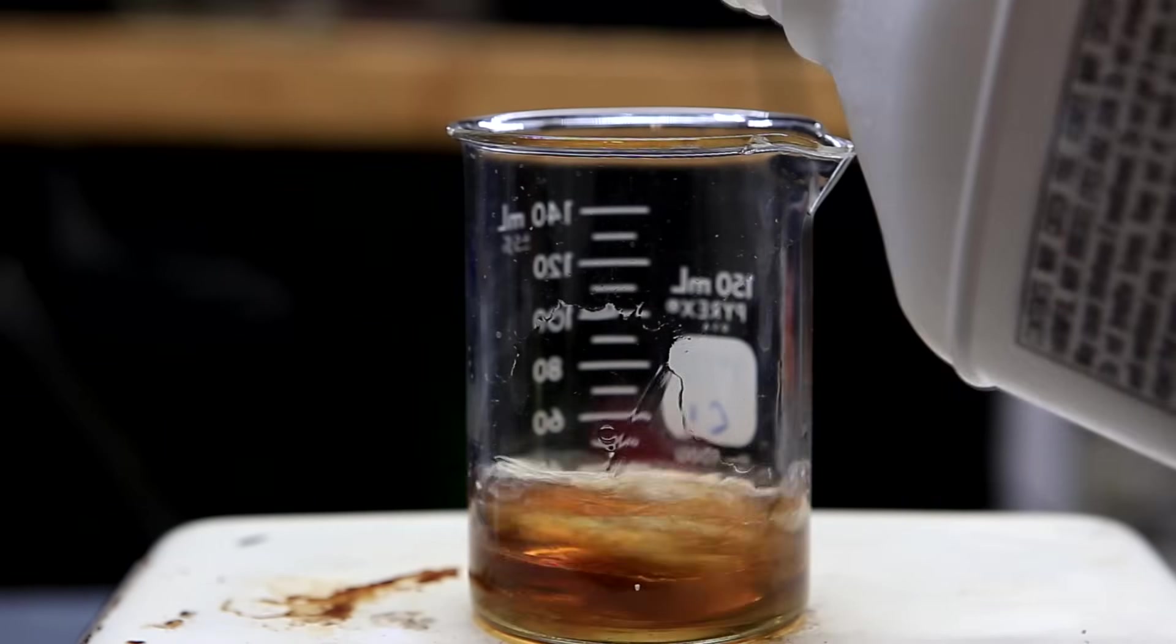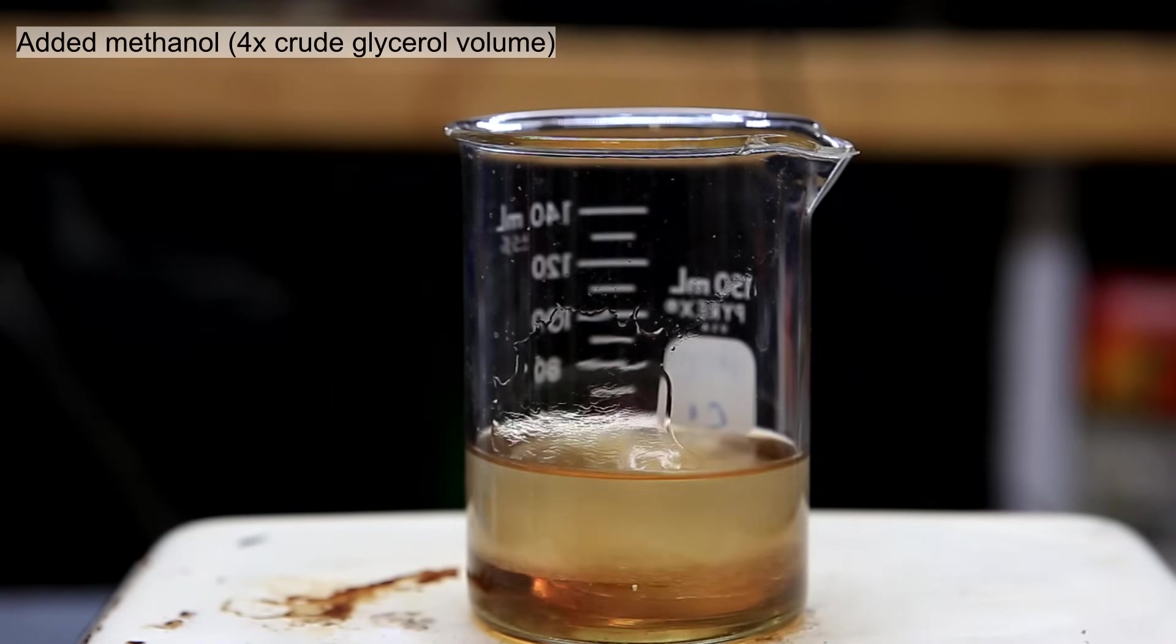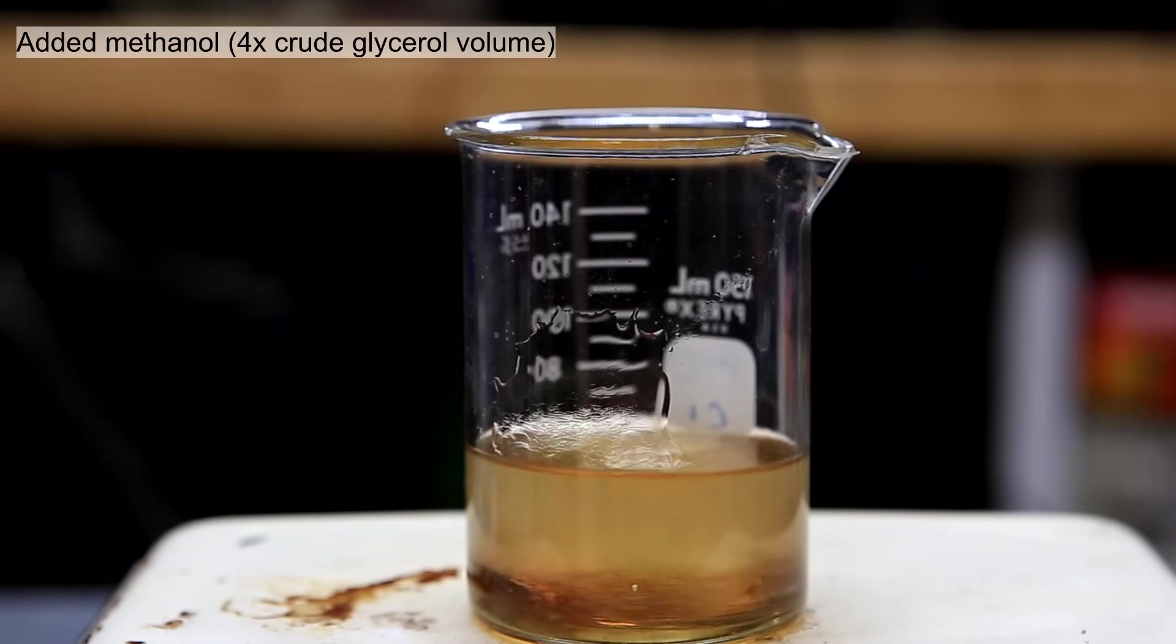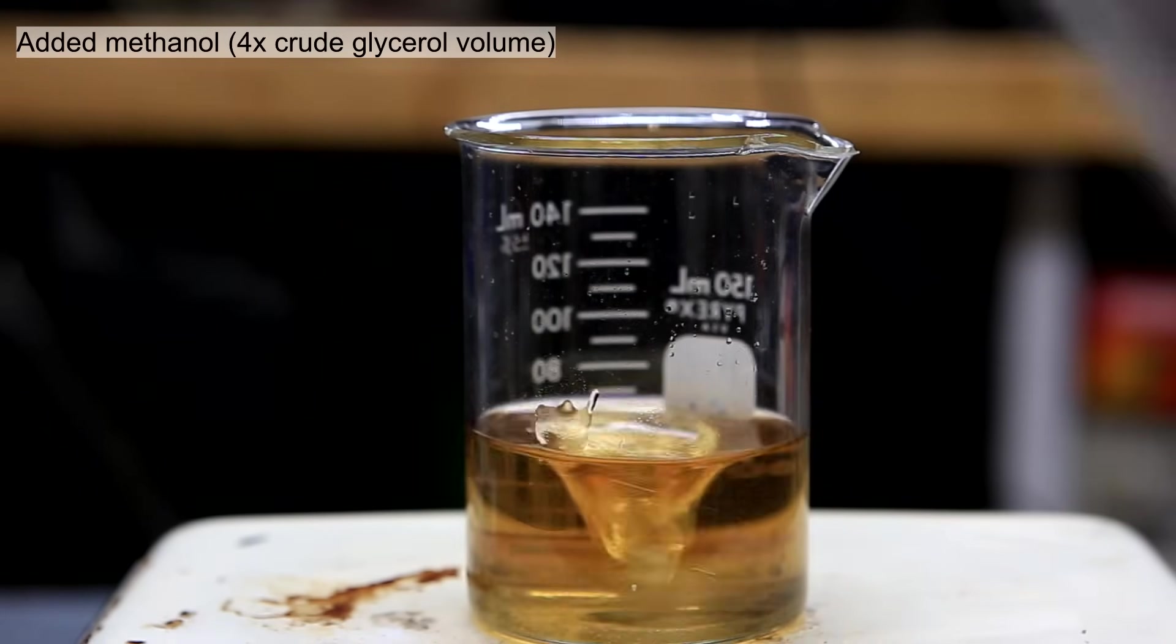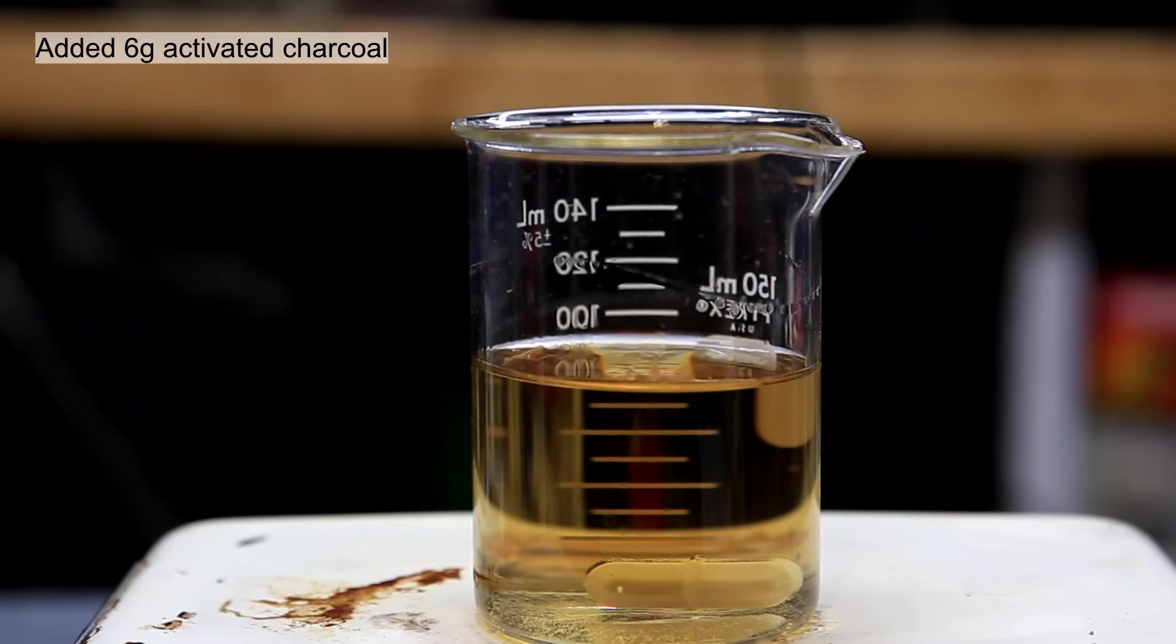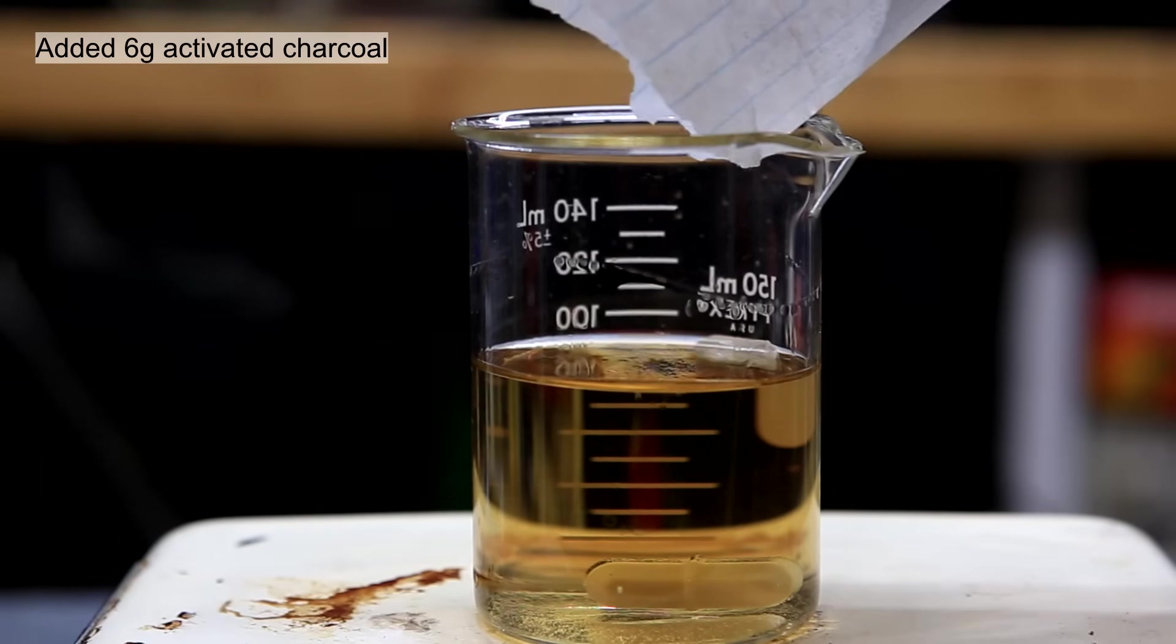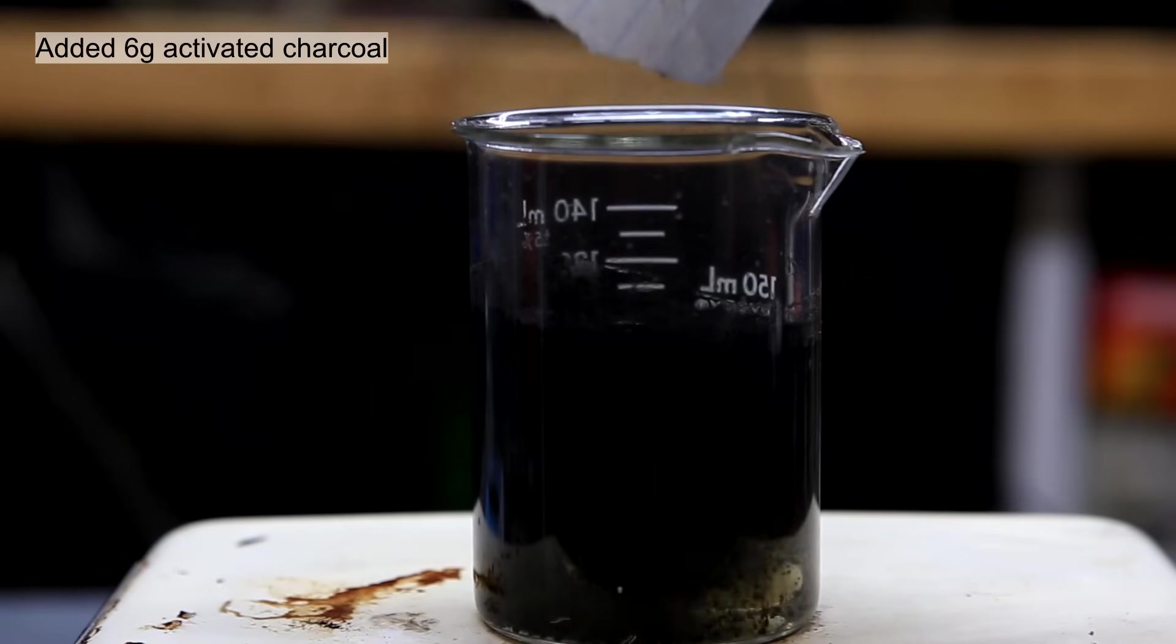The next step is to decolorize the glycerol. I dissolved the glycerol in 4 times its volume in methanol. I appeared to have roughly 20 milliliters of crude glycerol, so I added 80 milliliters of methanol. Once it had fully dissolved, 6 grams of activated charcoal was added. The activated charcoal is added to remove the colored impurities.